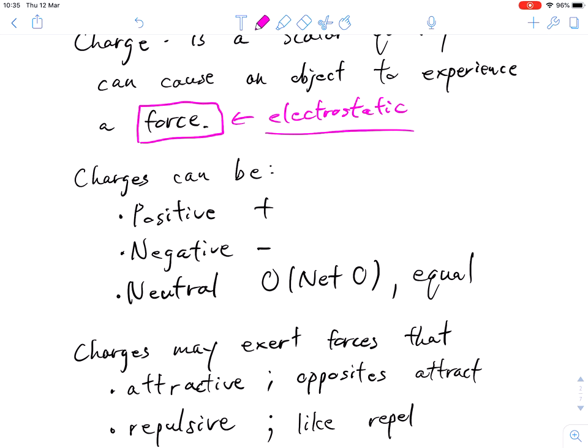And charges can be either positive or negative. You probably learned this back in earlier science classes in maybe grade 8 or grade 9. And charges can also be neutral. So be very careful. We like to say that an object has a net neutral charge.